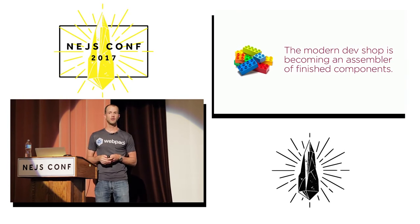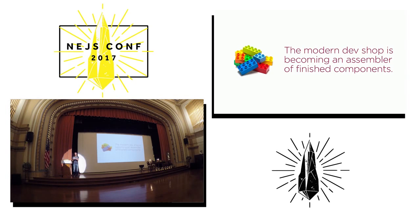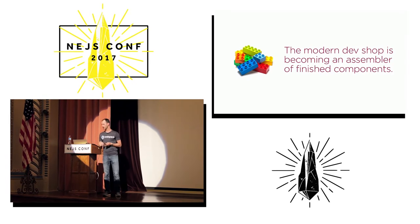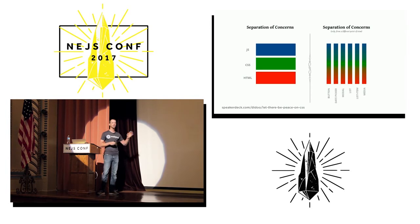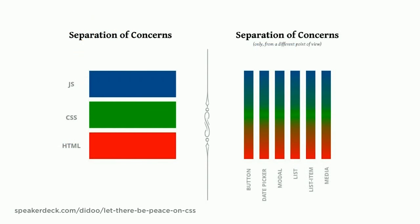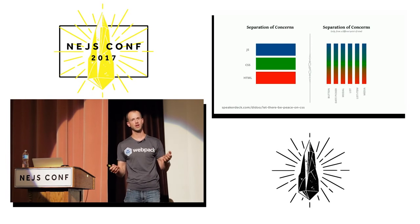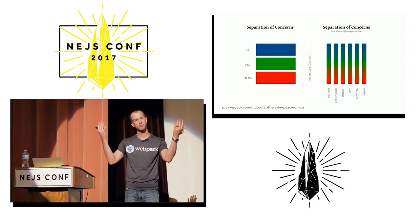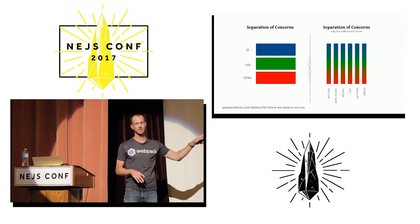I believe the future of development is going to be assembling finished components — taking those components and putting them together in novel ways, thinking of ourselves like working with Lego pieces rather than building the Legos ourselves. This requires a mindset shift: for the longest time we've talked about separation of concerns as a separation of JavaScript, HTML, and CSS. I don't believe that's valid anymore. Separation of concerns today is a matter of components — separating a button from a date picker from a modal dialog. HTML and JavaScript were never truly separated concerns.